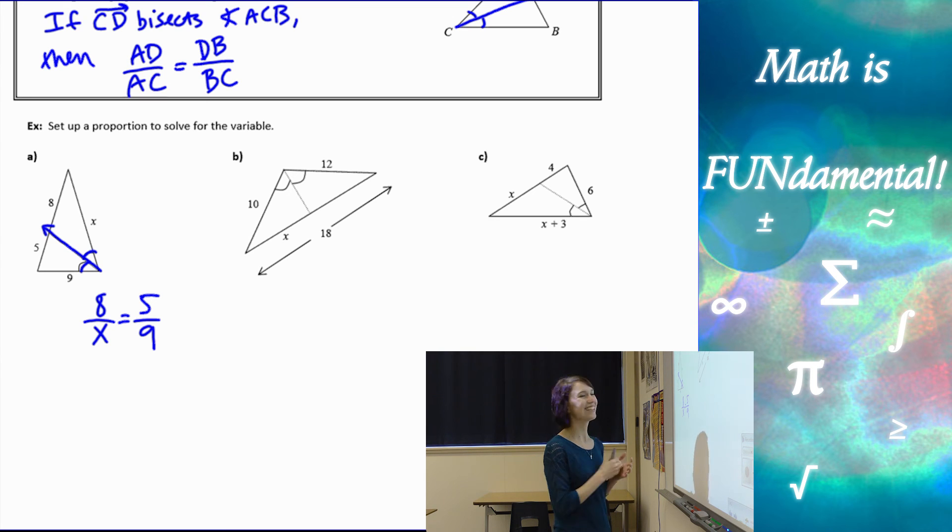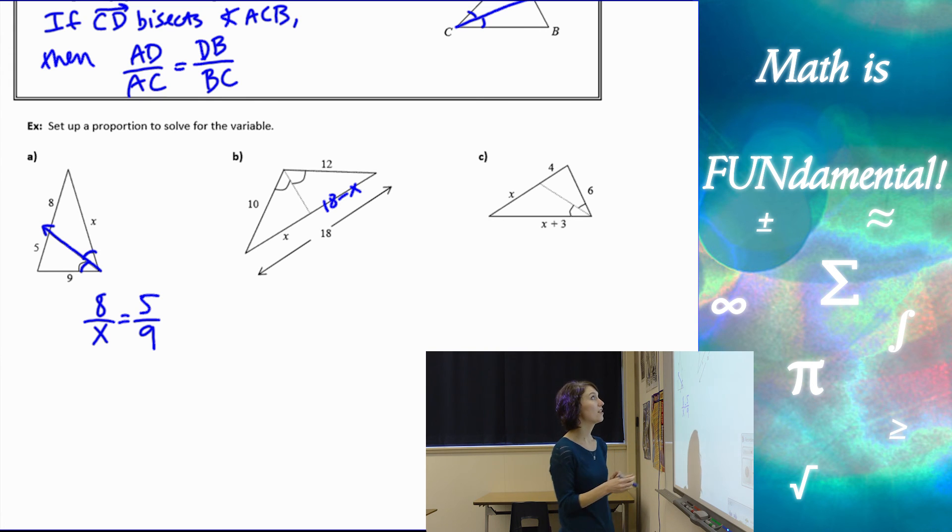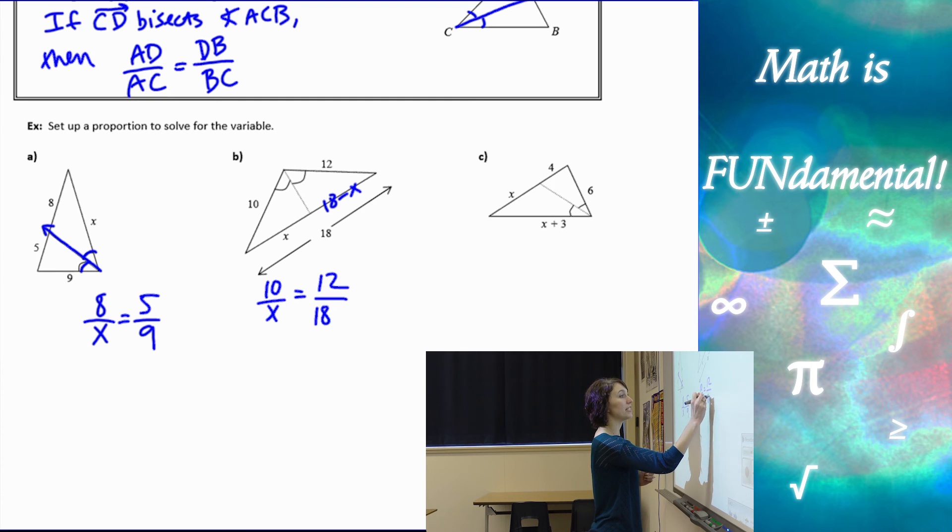Next one, kind of the same idea. But remember, if we're missing any pieces, we need to fill those in first. So if the whole thing is 18, then this piece is going to be 18 minus the other portion, which is X. We have our angles bisected. So 10 over X equals 12 over 18 minus X. Cross multiply and divide.